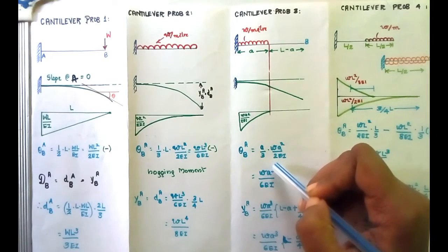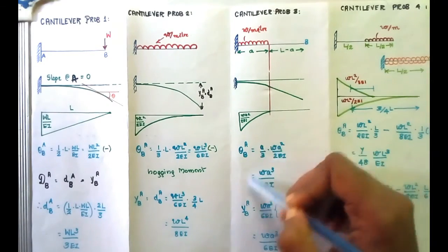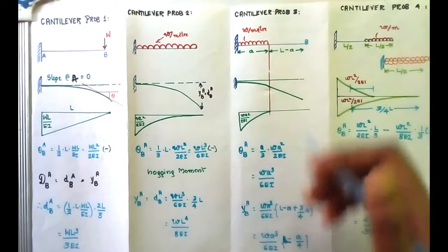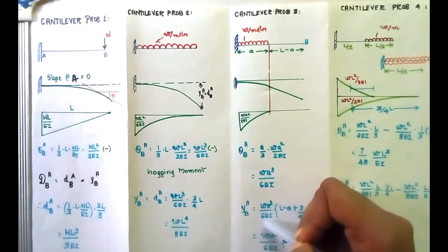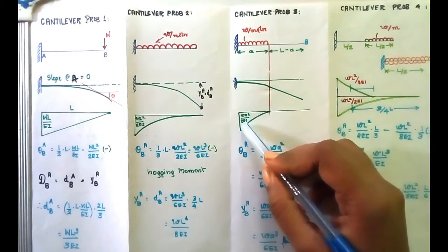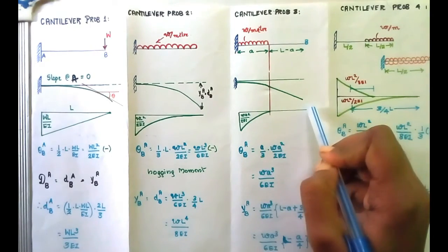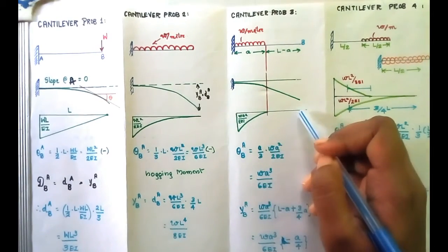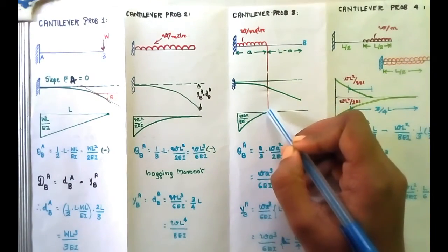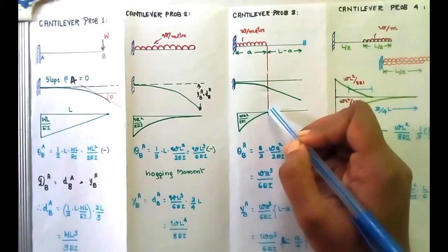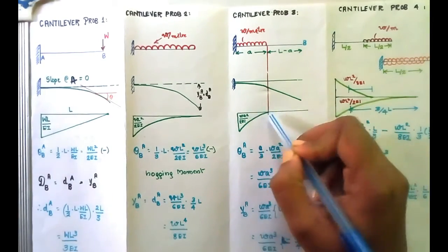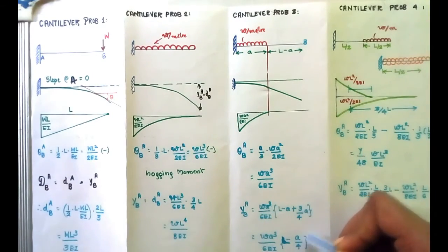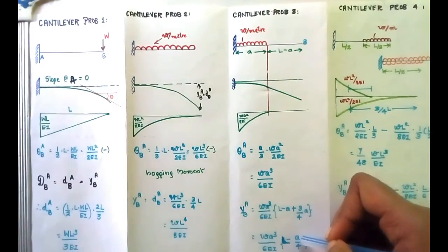The slope contribution from the spandrel area is: two-thirds of WA squared by 2EI into A by 3, which equals WA cubed by 6EI. For deflection, the moment of the spandrel area with respect to B is taken. The centroidal distance of the spandrel from B is 3 by 4a plus L minus a. So the deflection equals WA cubed by 6EI into L minus a divided by 4.